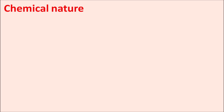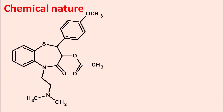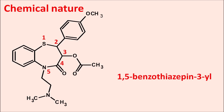The structure of Diltiazem shows a six plus seven membered ring system — a benzothiazepine. Numbering starts from sulfur: sulfur is at position 1, nitrogen at position 5, giving a 1,5-benzothiazepine ring system. This ring has an ester at the third position, formed by acetic acid — suffix 'acetate'. So Diltiazem is a 1,5-benzothiazepine-3-yl acetate derivative.